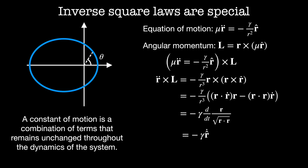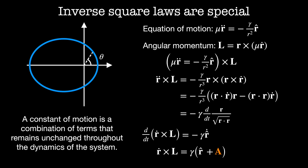Our goal now is to rewrite the left-hand side to make it look like it's a derivative with respect to time, then use that to find a constant of the motion. Since angular momentum is conserved, its rate of change is zero, which means the only time derivative needs to act on r double dot. So we can pull out a factor of the time derivative and we get d/dt of r dot cross L equal to minus gamma times d/dt of r-hat. Integrating both sides, we get r dot cross L equal to gamma times r-hat plus a constant of integration which we'll call A.